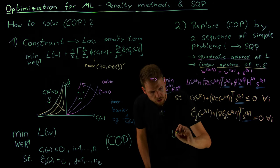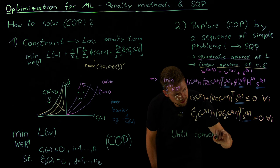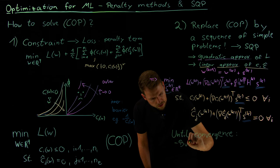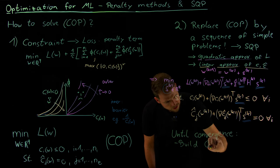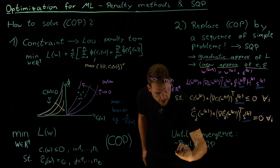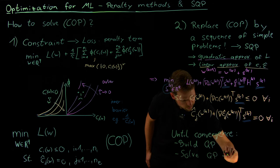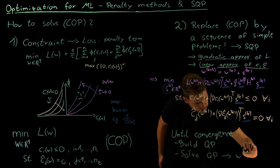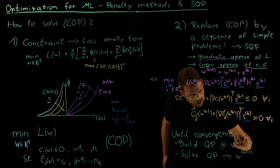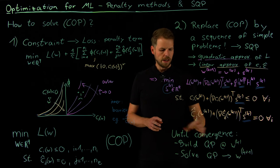And now you have it. This is our second strategy. And what we need to do is until convergence is two steps. Approximate, so build approximate model. So build our quadratic program, quadratic loss function, linear constraints, and solve the QP. This gives us our W K plus one. So we build at our current iterate this quadratic approximation. We minimize it and get our update until convergence.